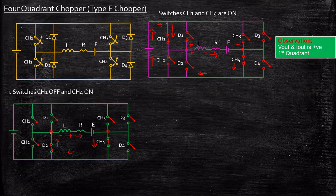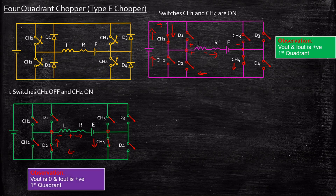At this point the output voltage is zero because CH4 and D2 form a short circuit. So Vout is zero, whereas Iout is positive because current is still flowing into the load according to our convention. If you want this circuit to operate in the first quadrant, you play around with choppers CH1 and CH4 to achieve that.